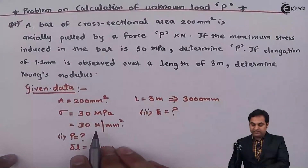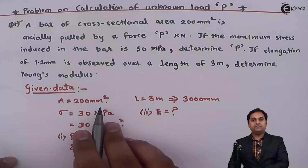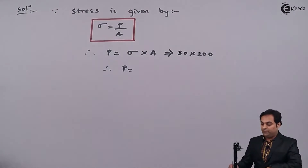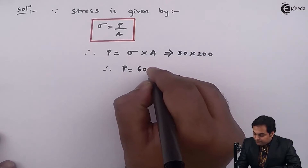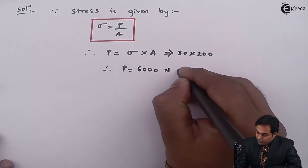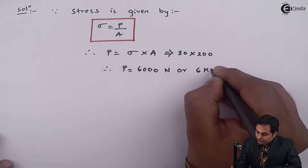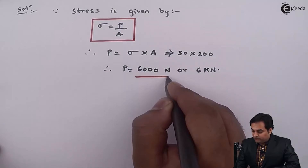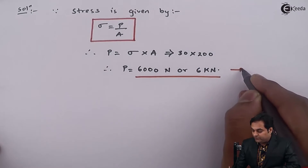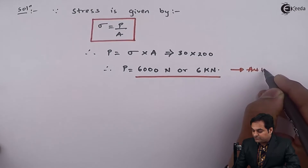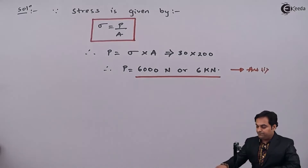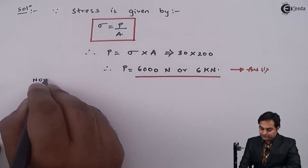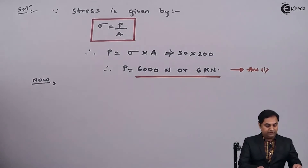The unit of stress is Newton per mm² and area is in mm², so P will be in Newtons. This comes out to be 6000 Newton, or 6 kilonewton if we want the answer in kilonewtons. So this is the unknown load acting on the bar, which we have calculated.